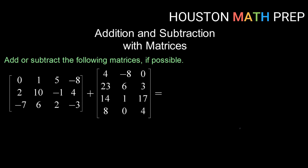Final example: add or subtract if possible. Let's check our dimensions. The first matrix has three rows by four columns — a three by four. We are trying to add to that a matrix with four rows by three columns — a four by three. Although the dimensions share the same numbers, the number of rows is different and the number of columns is different. So these two matrices are not the same size and therefore cannot be added. This is not possible.